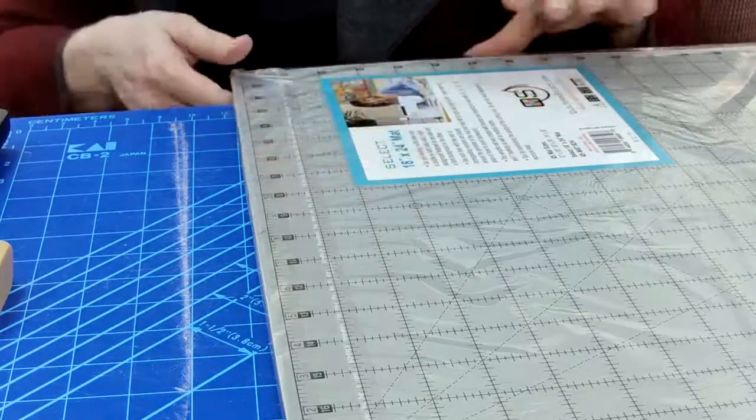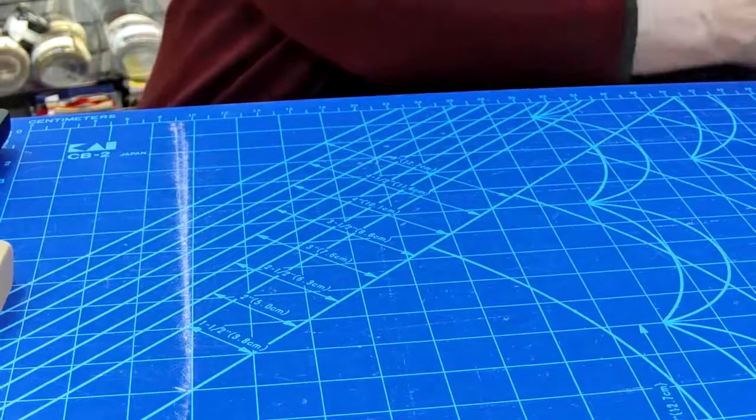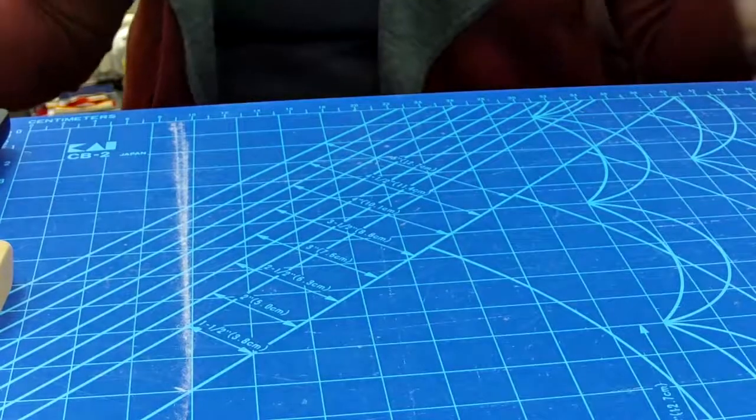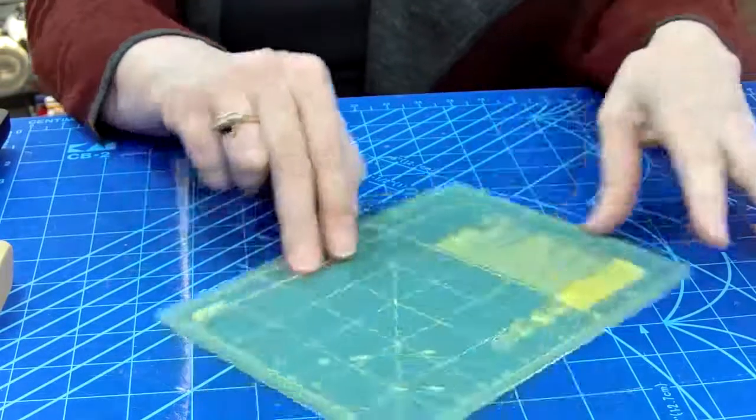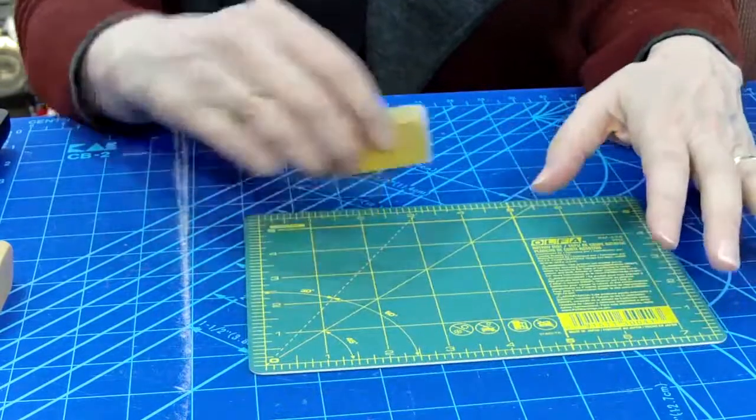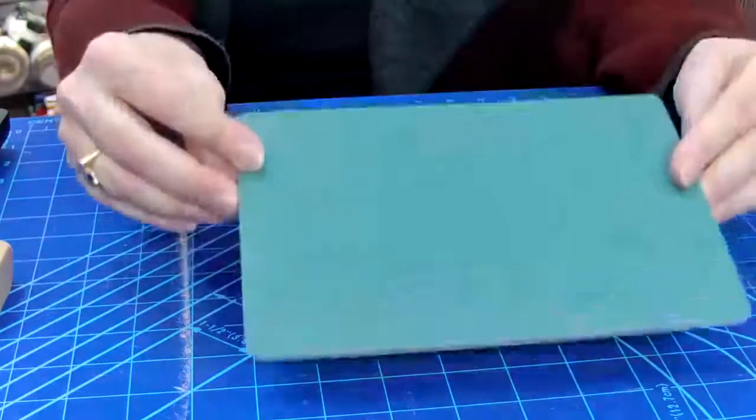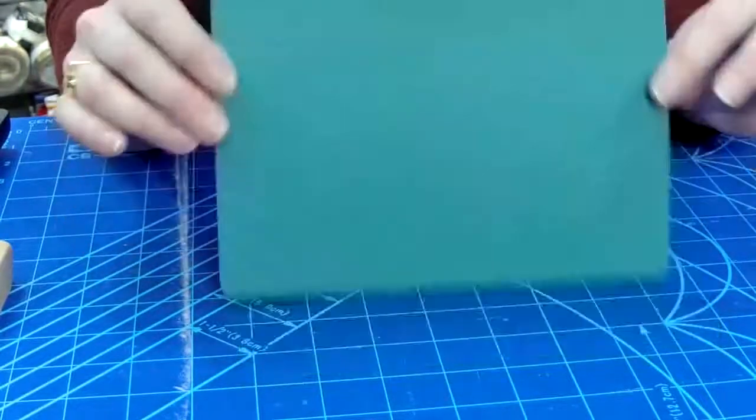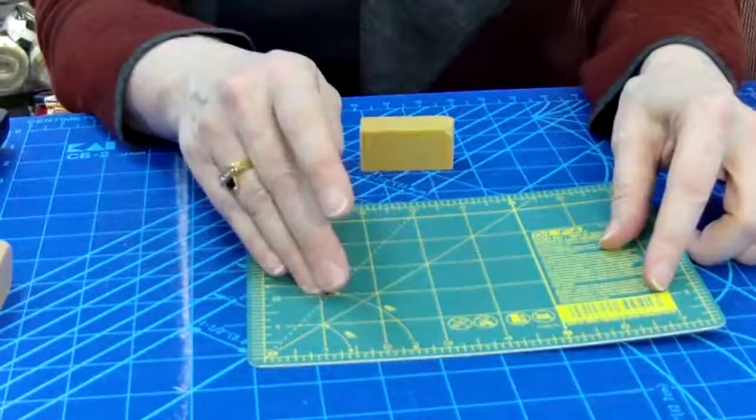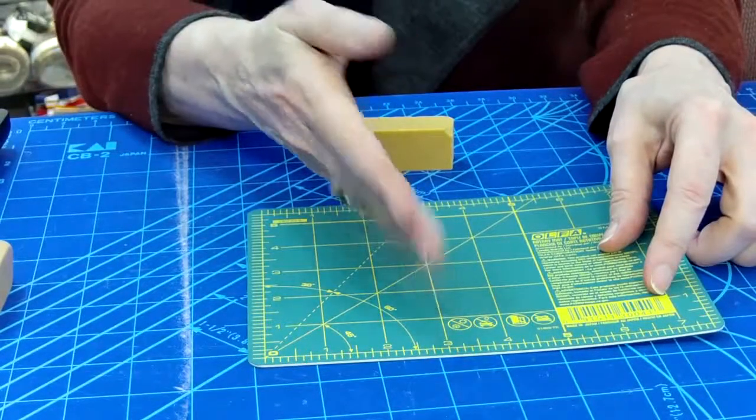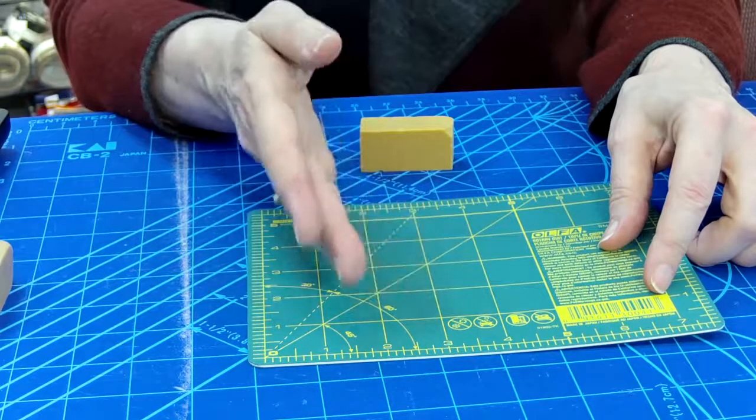That's what Quilter Select has to offer in the way of their cutting mats, and again they're very heavy, very solid. So I'm going to bring forward a tiny little Olfa cutting mat. Olfa's mats have markings on one side and they're plain on the other side. These mats, as well as the Quilter Select, are a self-healing mat, and self-healing means that if I cut them with a rotary cutter, that cut mark is going to heal and allow me to use this mat over and over and over again.